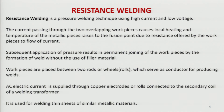Because the current is high and the voltage is low, we do not need filler material. Work pieces are placed between two copper electrode rods or wheels, put in a lap manner, and brought to a fusion state by bringing the electrodes together. When I say wheels, that is another form of resistance welding. AC electric current is supplied through copper electrodes connected to the secondary coil of the welding transformer. It is used for welding thin sheets of similar metallic material.